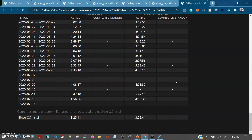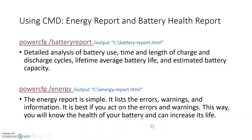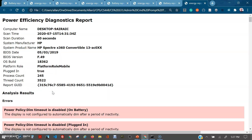To determine where to improve battery health and increase its life, you need to generate an energy report. You use PowerCFG /energy and you will get a detailed report on power usage in your computer. Again, if you add /output followed by the path in quotes, you can put the report wherever you want so you're not searching for it on your hard drive. This is what that report looks like.